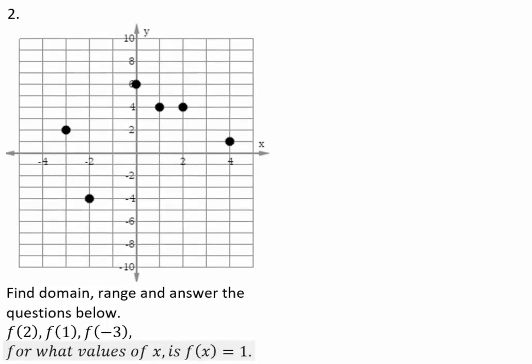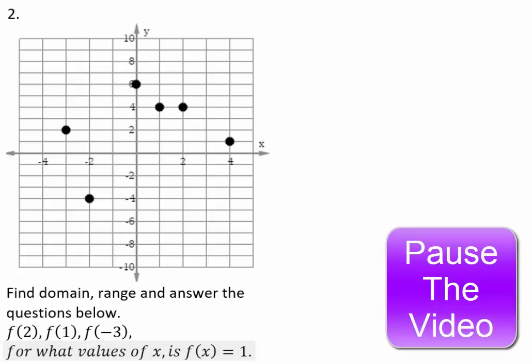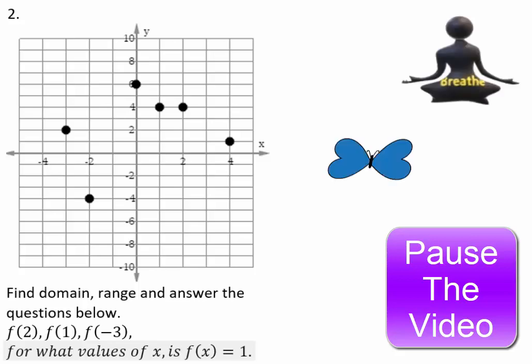In this example, you are given a function and asked to find domain and range, and then also f of 2, f of 1, f of negative 3, and for what x values you get f of x equals 1. Go ahead, pause the video here, do the problem on your own, and then we'll come back and discuss it together. Don't just sit there and wait for me — please attempt it on your own.